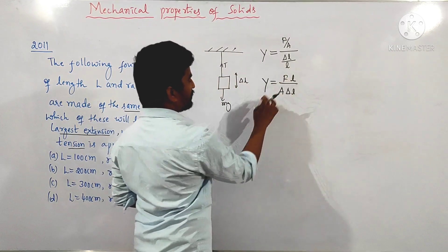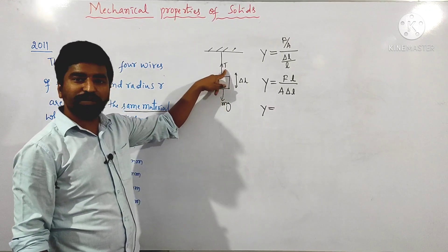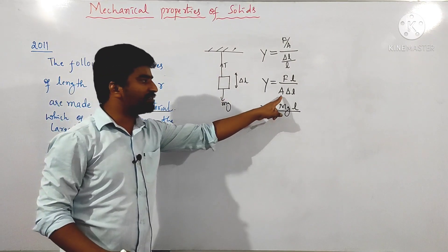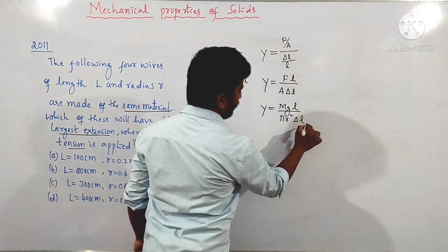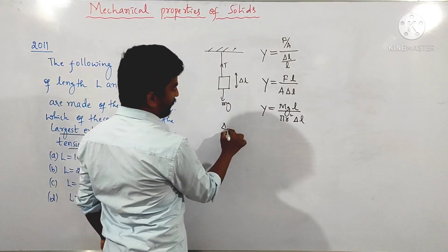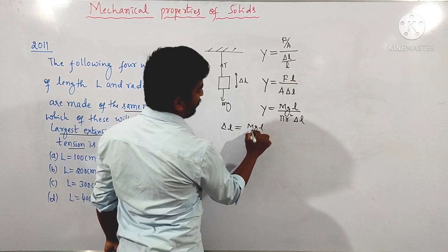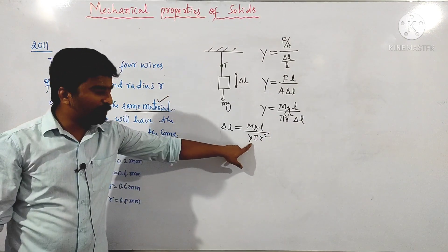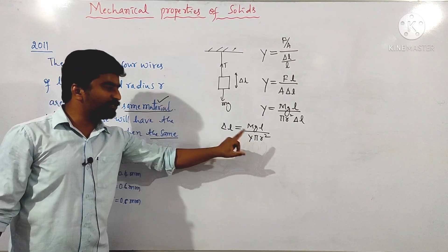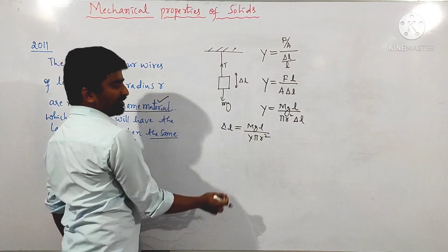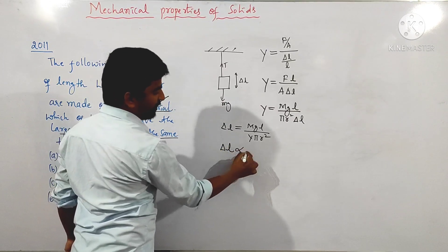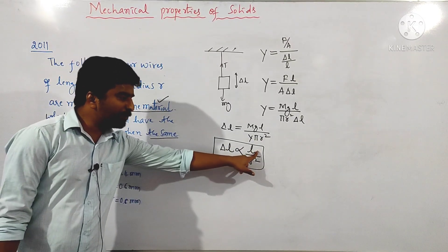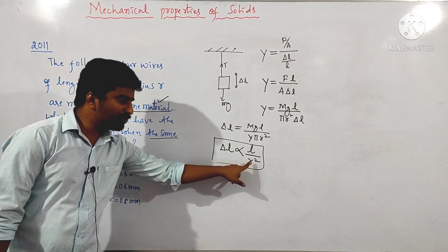Since the material is the same, Young's modulus is the same — because Young's modulus is a material property. Force is also the same (same tension). So delta L extension depends on the length of the wire and the radius of the wire. Extension is directly proportional to the length of the wire, and inversely proportional to the square of the radius of the wire. So the smaller the radius and larger the length, the greater the extension.